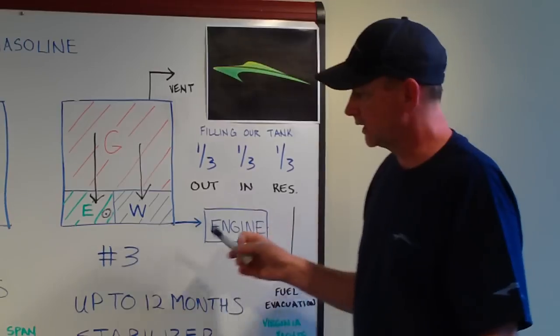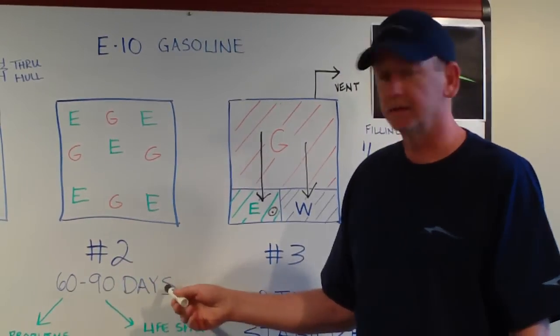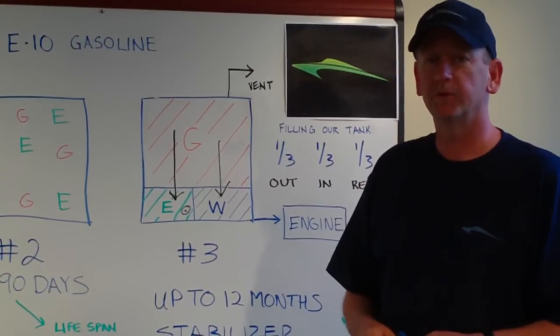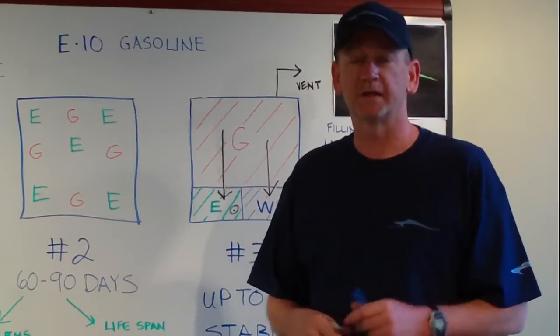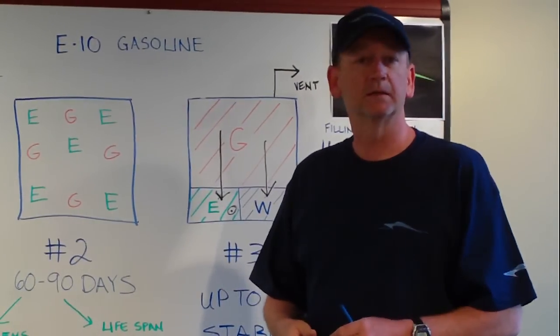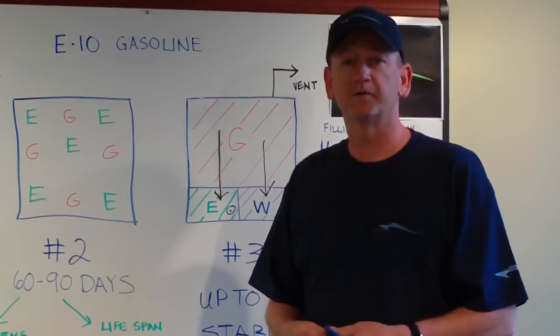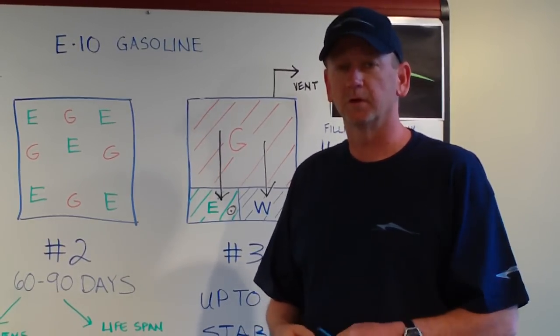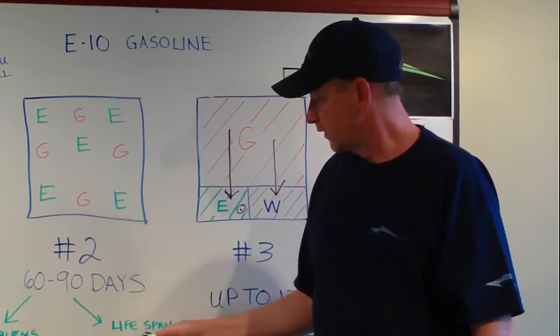If we come over here to figure two, we have 60 to 90 days. This is the lifespan of ethanol blended fuel. 90 days is what the manufacturers are saying is the lifespan from date of manufacture till phase separation, which we spoke of in the earlier video, starts to occur or has already occurred. So that is our lifespan.